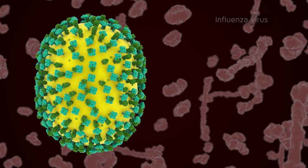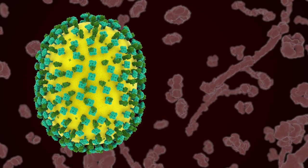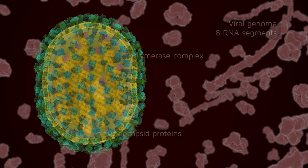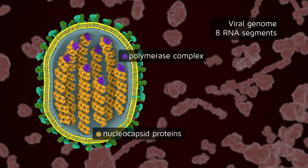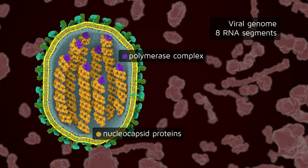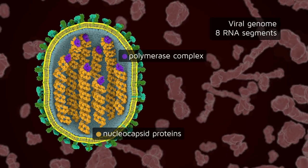This virus attacks respiratory system cells. The viral genome consists of eight RNA segments enclosed under the viral membrane. Each segment is associated with nucleocapsid proteins and the polymerase complex.